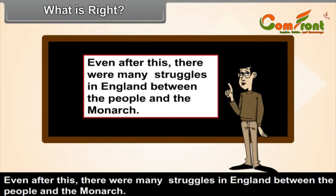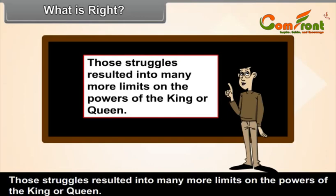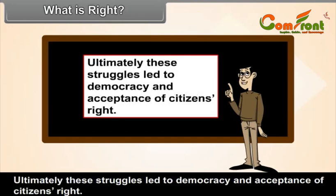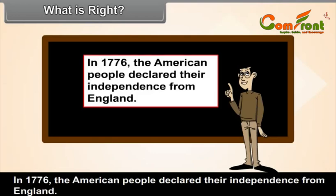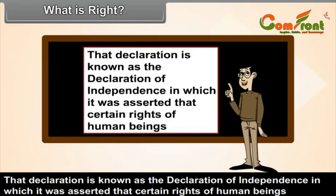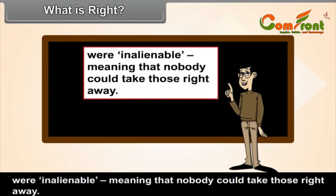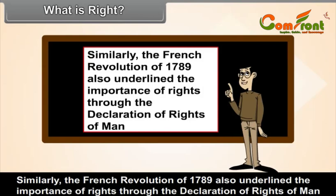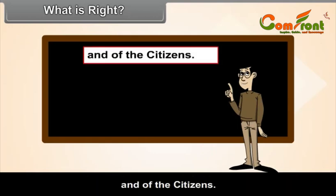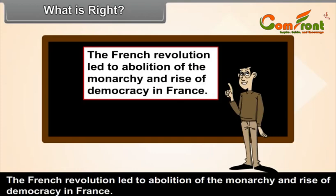Even after this, there were many struggles in England between the people and the monarch, resulting in many more limits on the powers of the king or queen. Ultimately, these struggles led to democracy and acceptance of citizens' rights. In 1776, the American people declared their independence from England in the Declaration of Independence, asserting that certain rights of human beings were inalienable — meaning that nobody could take those rights away. Similarly, the French Revolution of 1789 underlined the importance of rights through the Declaration of Rights of Man and of the Citizens, leading to the abolition of the monarchy and the rise of democracy in France.